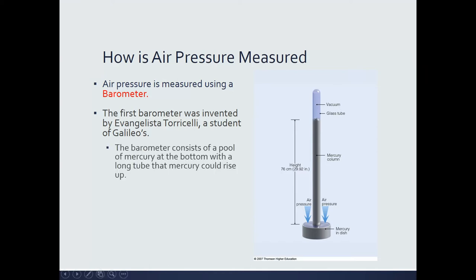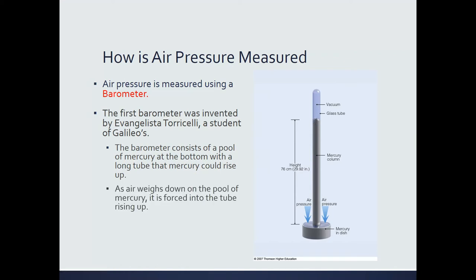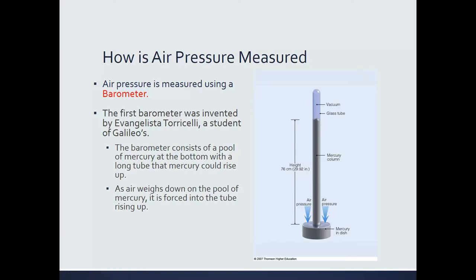The way Torricelli's barometer worked was that you had a pool of mercury at the bottom, and then a long tube sticking out in the middle. As air weighed down on the pool of mercury, it forced the mercury up into the tube. The greater the pressure, the higher the mercury would rise. Torricelli found that it rose approximately 30 inches — specifically, average sea level pressure results in mercury rising 29.92 inches. This is where the term 'inches of mercury' comes from.